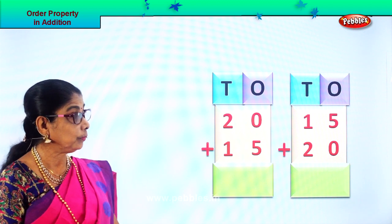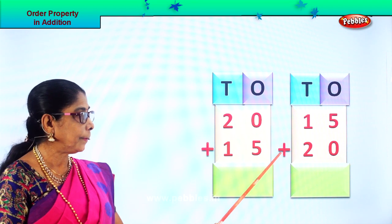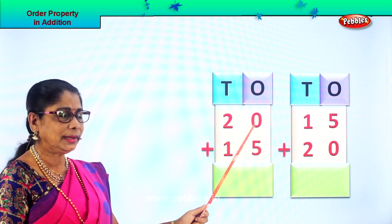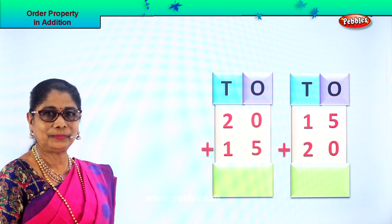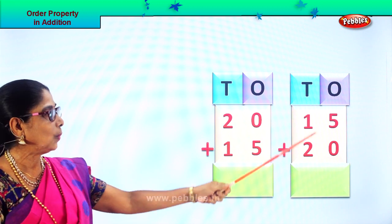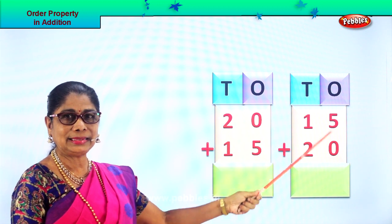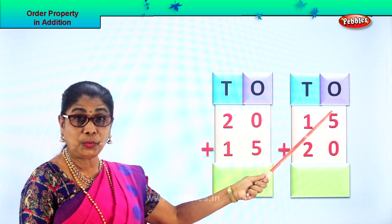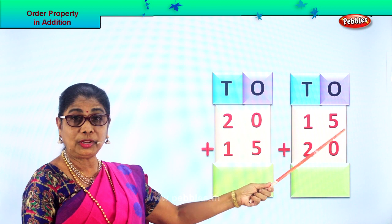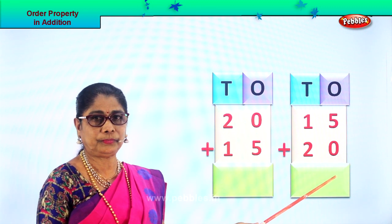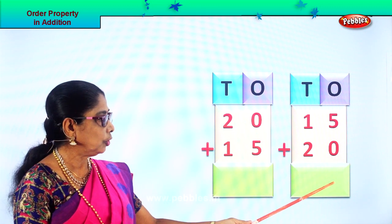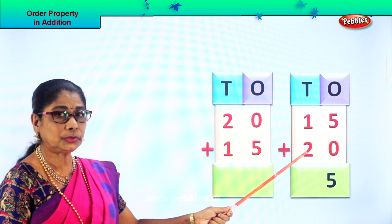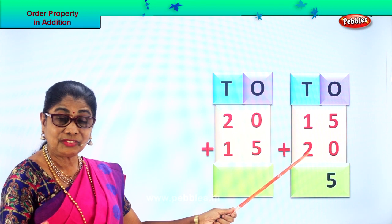Let's look at another sum. See what is given to you: 15 plus 20. In the ones place you have 5 ones and 0 ones. What is 5 plus 0? It's 5 itself. So you put 5 here — 5 plus 0 is 5 itself. Then in the tens place: 1 ten plus 2 tens. 2 plus 1 is 3 tens.